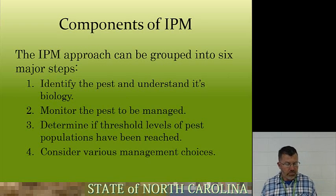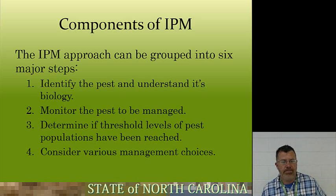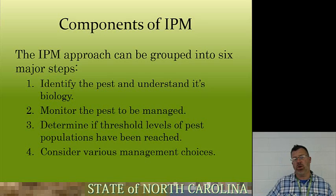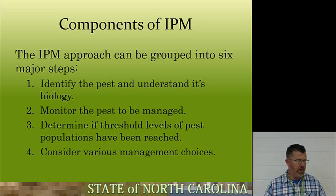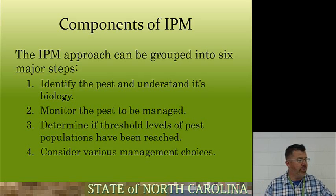Components of IPM: the IPM approach can be grouped into six major steps. First, identify the pest and understand its biology. Not knowing what you're spraying pesticide for is the biggest problem in pest management. Coming from a horticulture background, you'll be able to notice damage that helps identify pests. You'll know the biology — for example, aphids produce honeydew, so if you see honeydew dripping off plants, you probably have aphids.